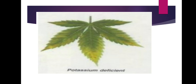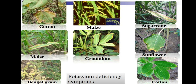In potassium-deficient leaves, loss of chlorophyll and brown spots are seen at tips. In cotton, margins become chlorotic and necrotic — both chlorosis and necrosis occur in potassium deficiency. In maize, sugarcane, and sunflower, margins become necrotic and cell death occurs along the margins. Ground nut, maize, bengal gram, and cotton all show these symptoms.